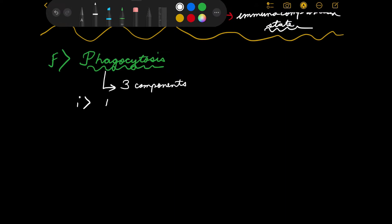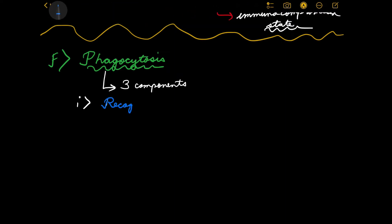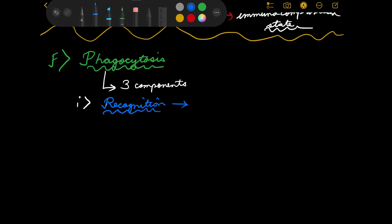The leukocytes have reached the source, but there are millions of cells all around. About 90% of them are host tissue and host cells. The WBCs are encountering all these cells, but cannot attack them under normal circumstances because they are self-cells. They only need to attack the offending agent, so they need to recognize it. For this, there are certain receptors on the leukocytes.